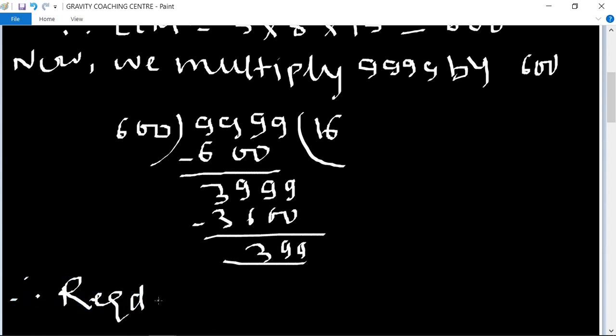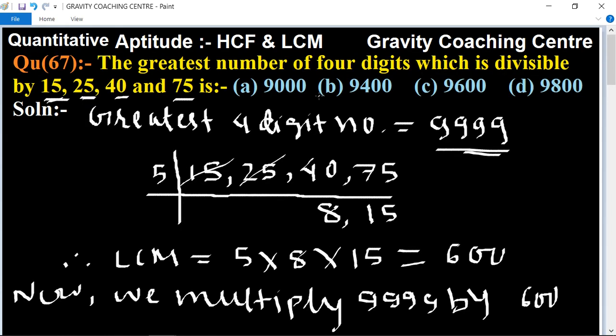Therefore, the required number equals 9999 minus 399, which equals 9600. This is the required number, so option C is the right answer.